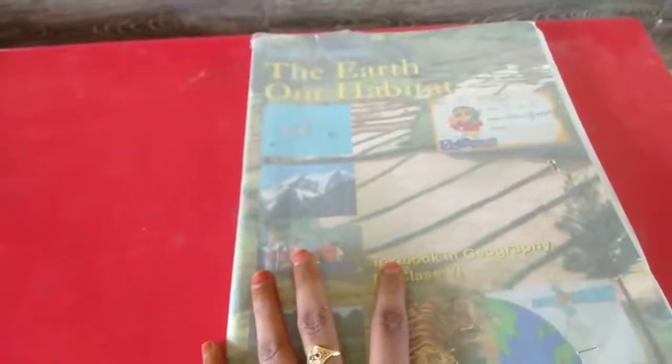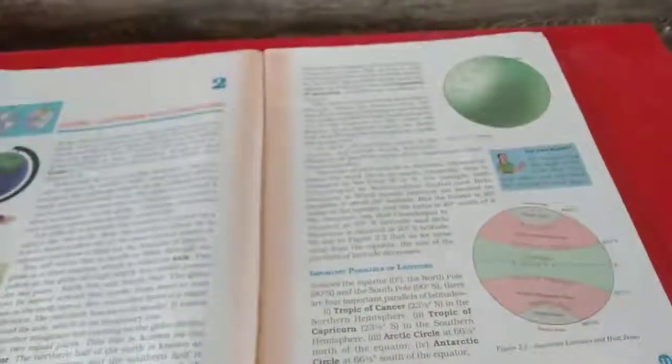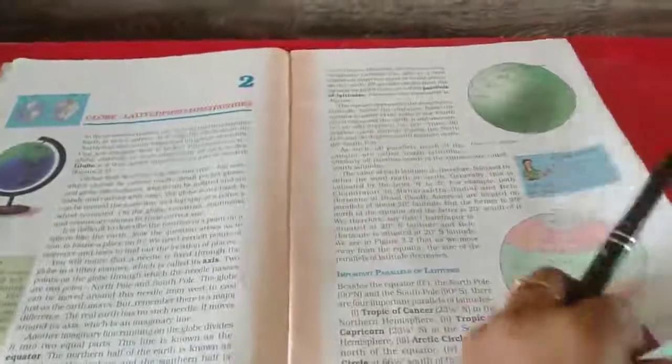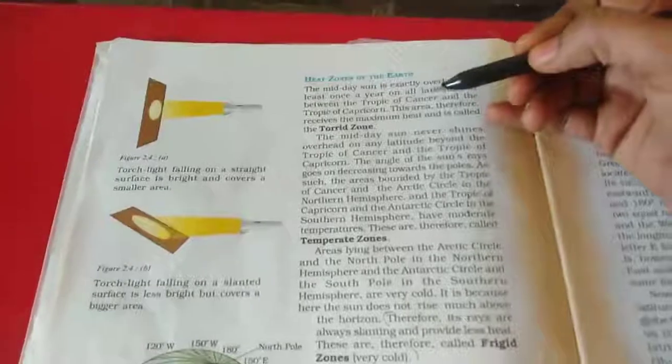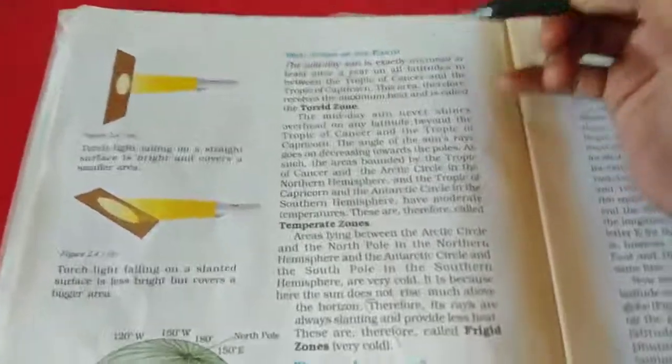Children, take your geography and social. We will continue about the longitudes and zones on the earth. Last class we read about parallels of latitudes, what is meant by latitudes, and how is the globe.